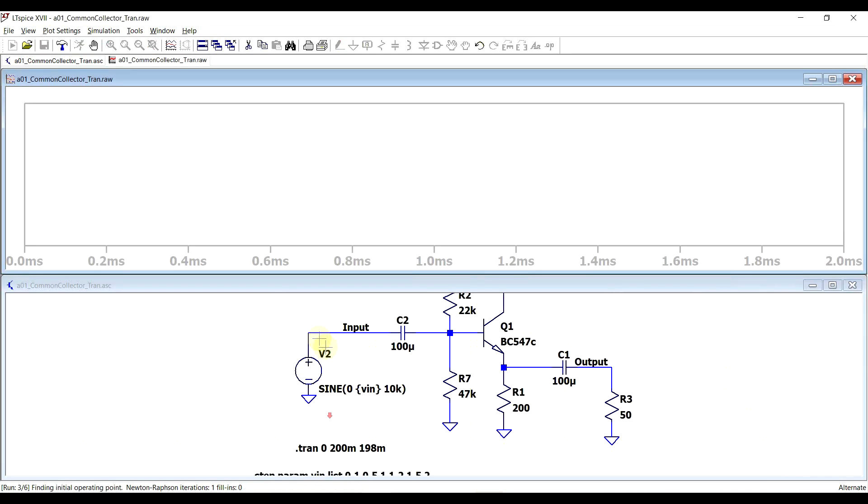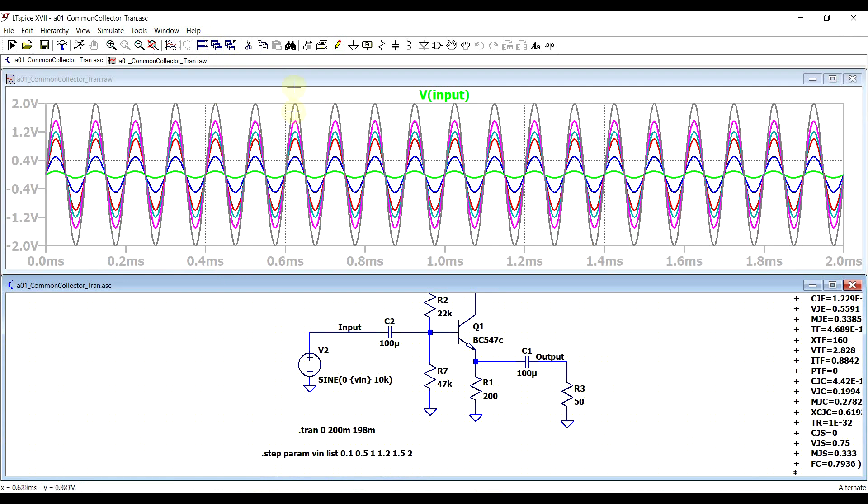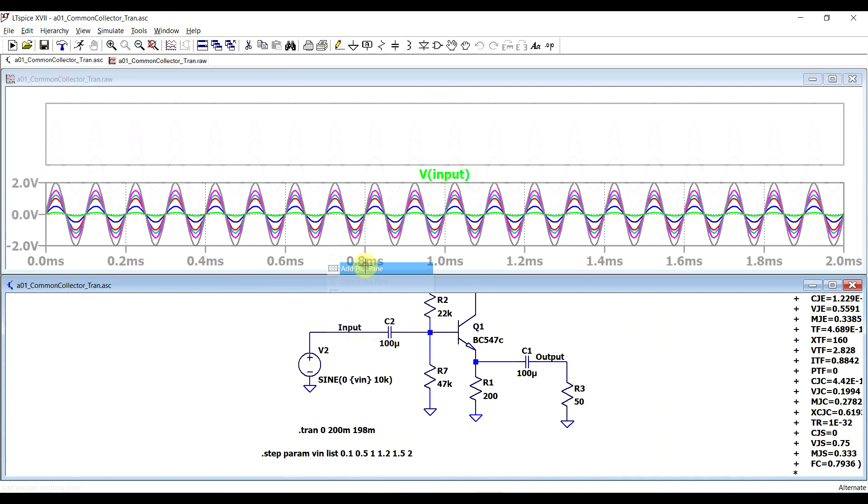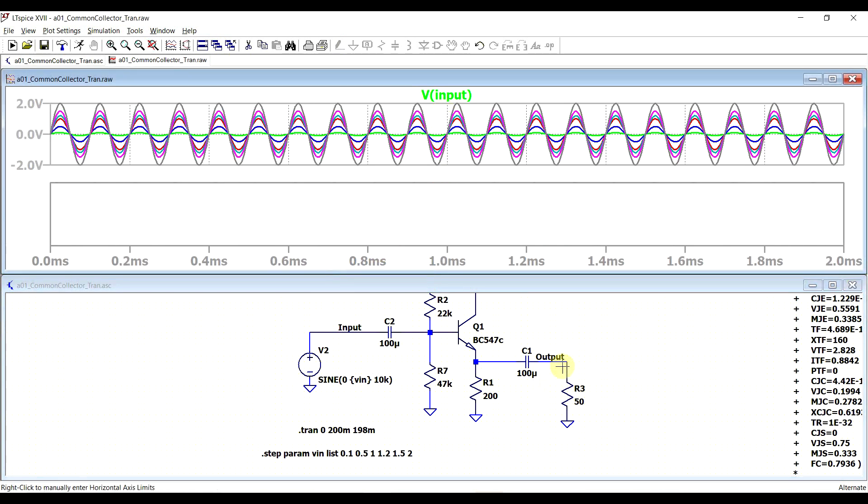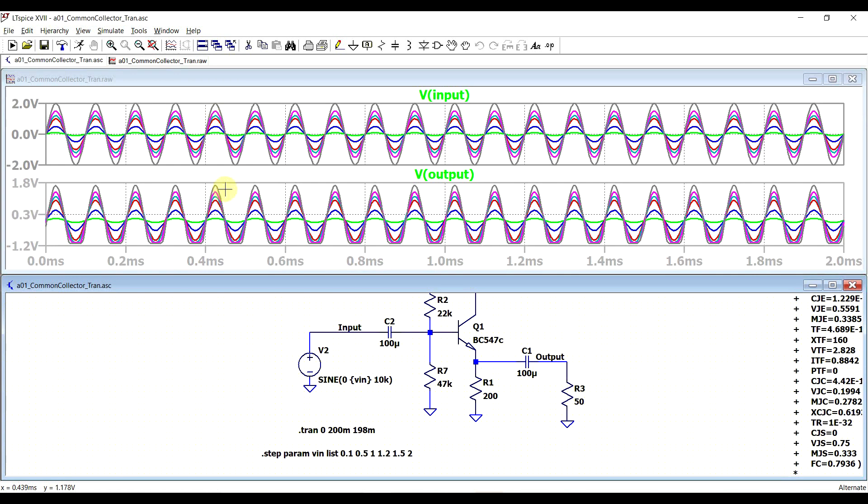If we run the circuit, we can see our multiple input voltages. The amplitude increases based on the parameter value, and if we add a plot plane and also plot out the output signal, first of all we can see that both signals are in phase, so this type of amplifier is non-inverting.